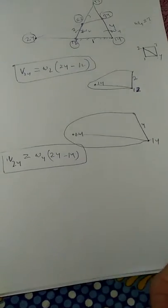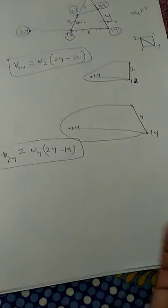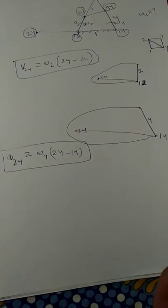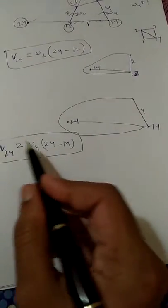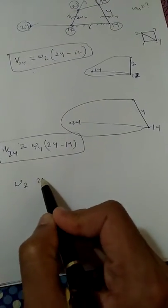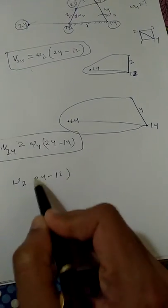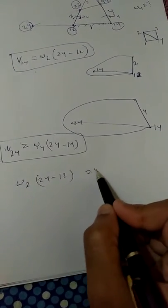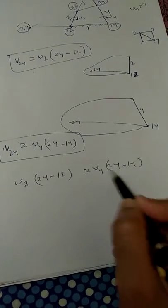Now the velocities are the same for this point. There cannot be 2 velocities for a single point. So we can equate these both equations as: omega 2 times (I24 minus I12) equals omega 4 times (I24 minus I14).